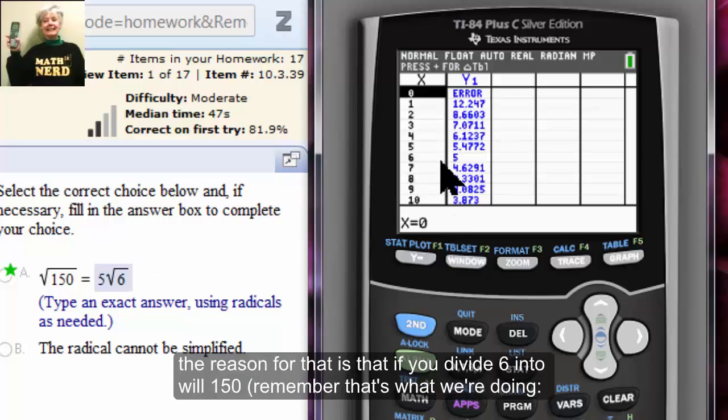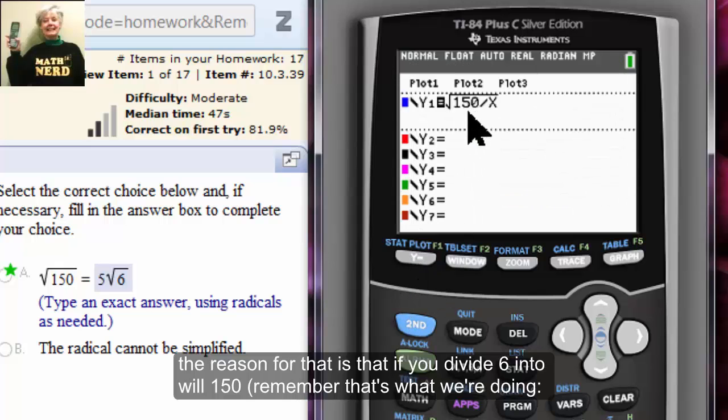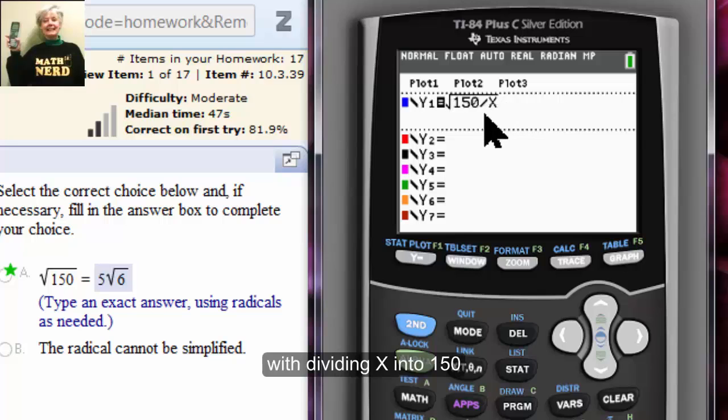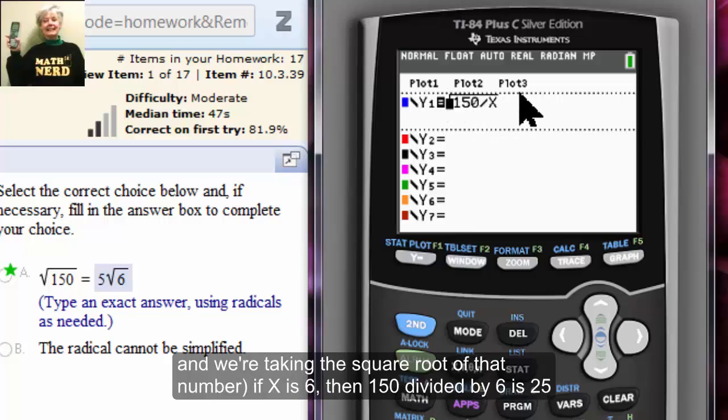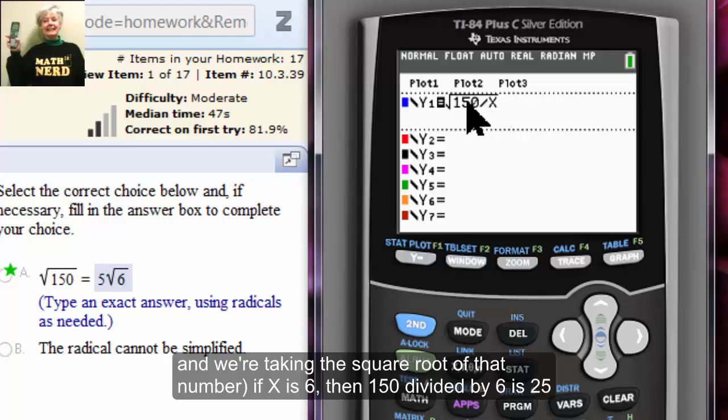The reason for that is that if you divide 6 into 150, remember that's what we're doing, we're dividing x into 150 and we're taking the square root of that number. If x is 6, then 150 divided by 6 is 25, and the square root of 25 is 5.